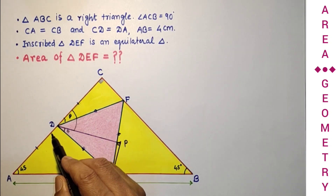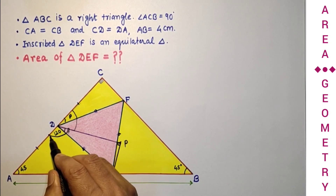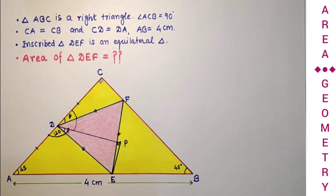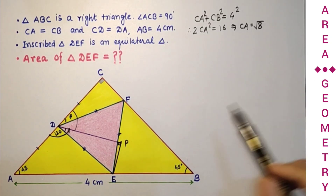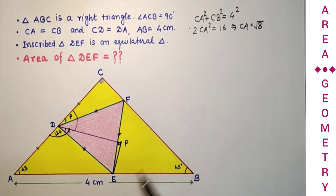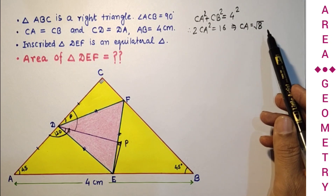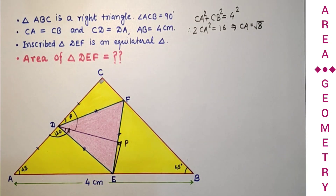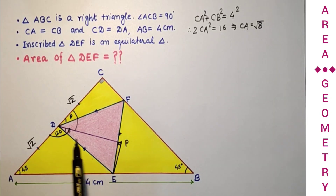If angle EDP is 60 minus theta, then the supplementary angle at that vertex is 120 degrees. Using the Pythagorean theorem: CA² + CB² = AB² = 16. Since CA = CB, we get 2·CA² = 16, so CA² = 8 and CA = √8 = 2√2. Since D is the midpoint of CA, CD = DA = √2. And since DP = DC, therefore DP = √2 as well.